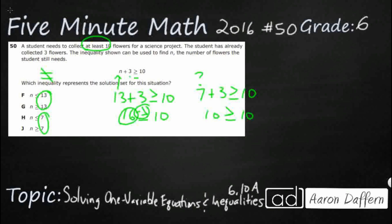Let's see what happens if I go a little bit smaller than 7. Let's take away 4 or add 4 and see what those solutions give me — a 3 and an 11. If I make n equal to 3 and add another 3, that does not work. 6 is not greater than or equal to 10. So going smaller than 7 — even though 7 itself works — going smaller than 7 does not work.